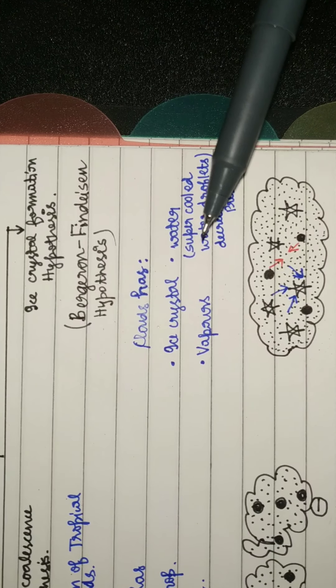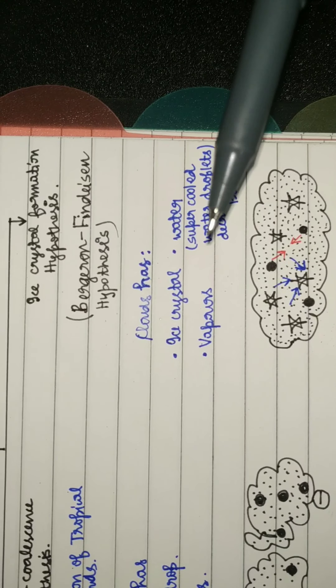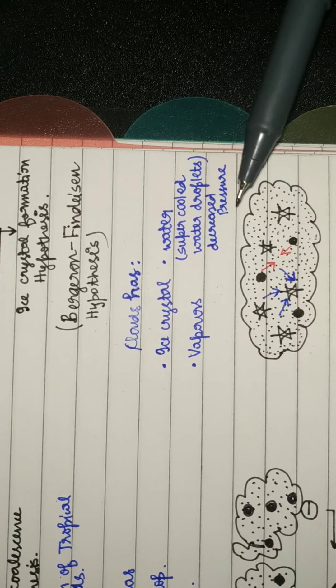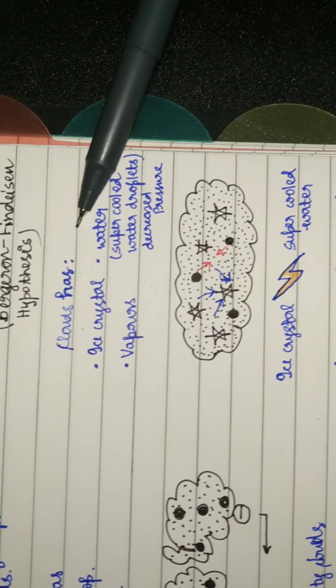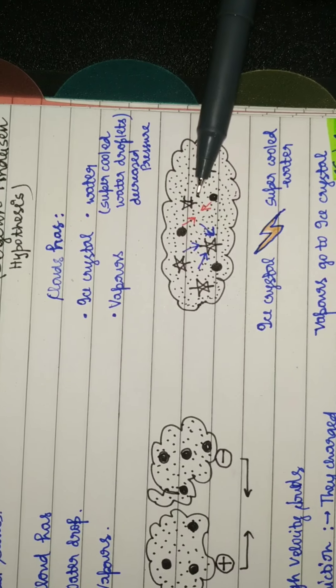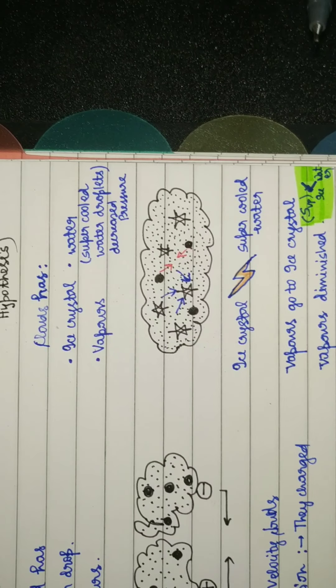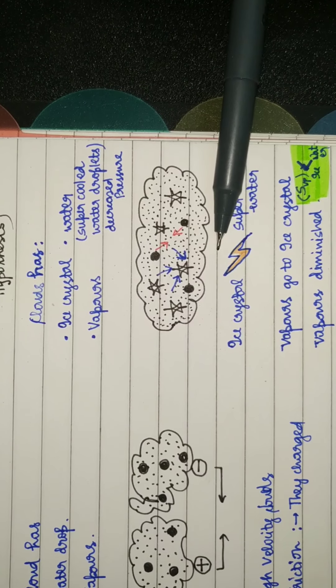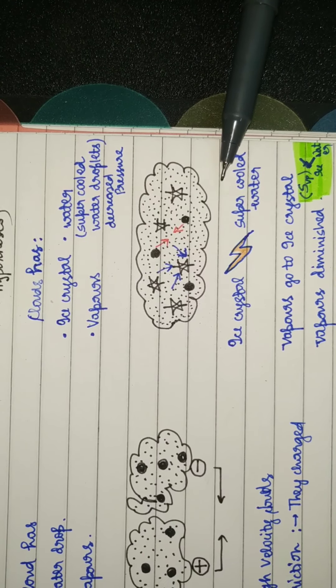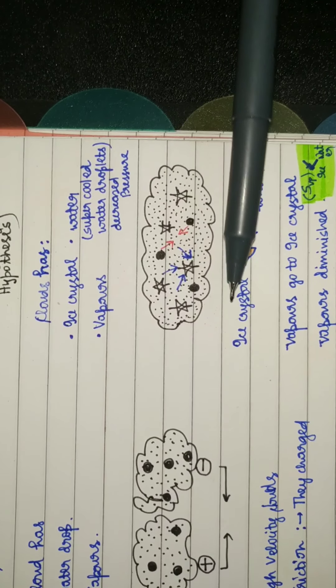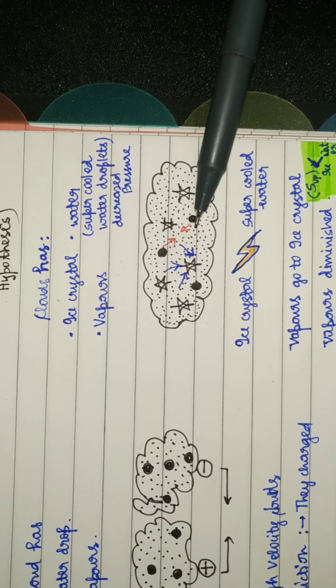At heights, the air pressure is reduced significantly and hence water exists even at minus 10, minus 20 degrees Celsius because these are super-cooled water droplets. The decreased pressure decreases their melting point. As you can see here, there are also ice crystals.